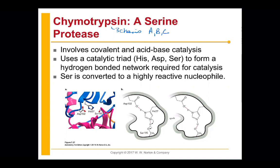Disulfide bonds link peptides together to form a complex or an enzyme. For this particular enzyme, the active site is actually on the surface of the molecule. That kind of makes sense because chymotrypsin is working on a huge molecule — a huge polymer substrate — so you don't want its active site to be deep inside a pocket; you want it on the outside.